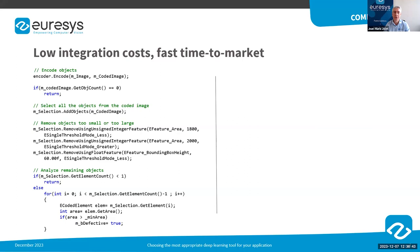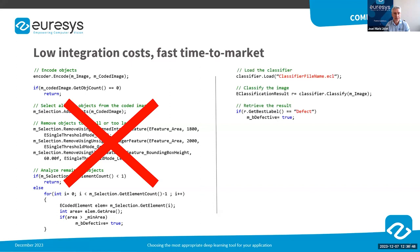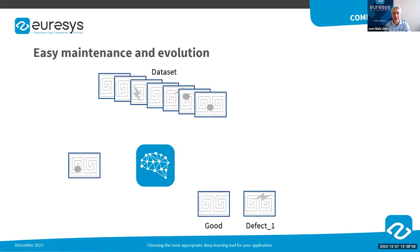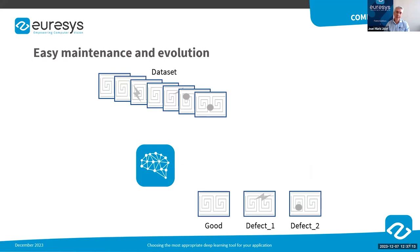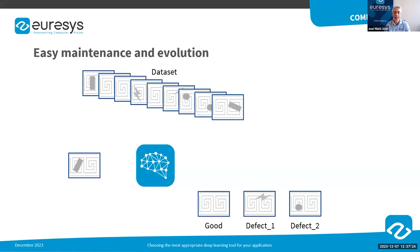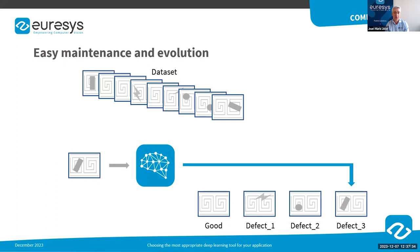In terms of programming, since we don't have to write code to describe in detail what is considered a defect, the development of deep learning-based applications is easier and much faster. Another advantage concerns the maintenance and evolution of such applications. If we consider an application which detects defective products and identifies the type of defects, and we need to upgrade it to detect a new type of defect, this evolution just requires adding images featuring the new defect in the dataset and then training the neural network — without the modification of a single line of code.